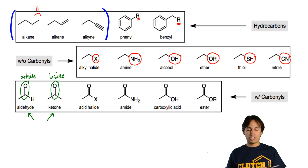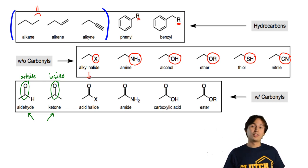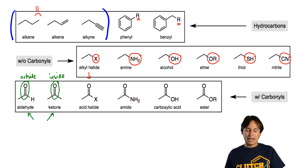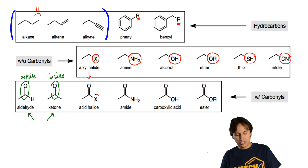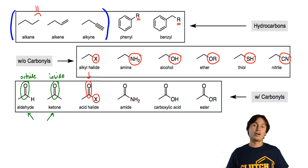So what if you take an alkyl halide and you add a carbonyl to it? Well, it's no longer called an alkyl halide — it's called an acid halide, because it has both a carbonyl and a halogen on it.